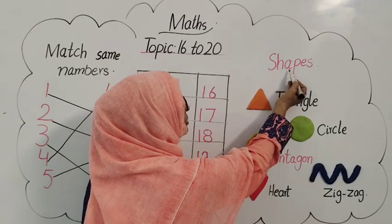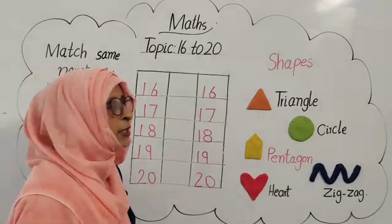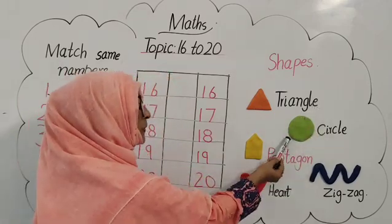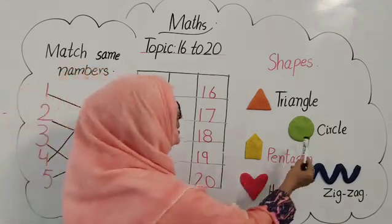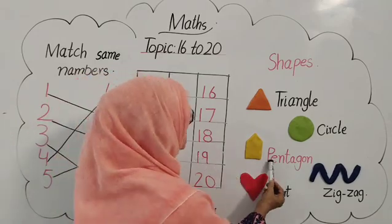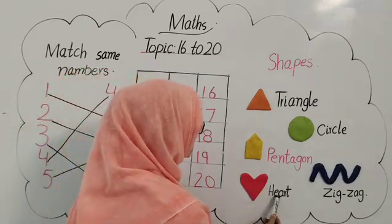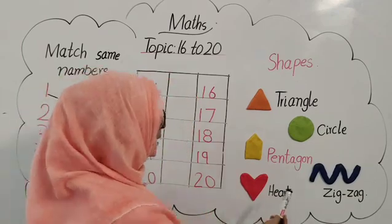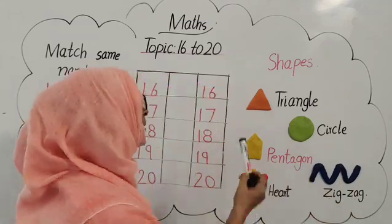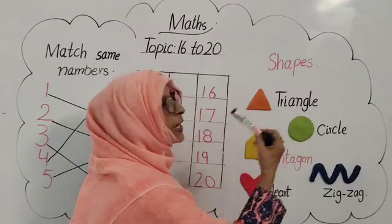Now, large shapes. Which shape is this? Triangle shape. T-R-I-A-N-G-L-E: Triangle. Which shape is this? Circle shape. C-I-R-C-L-E: Circle. Pentagon shape. P-E-N-T-A-G-O-N: Pentagon. Heart. Now, Zigzag shape. Z-I-G-Z-A-G: Zigzag. Triangle shape, spherical shape, pentagon shape, heart shape, zigzag shape.